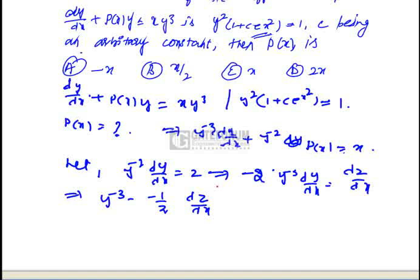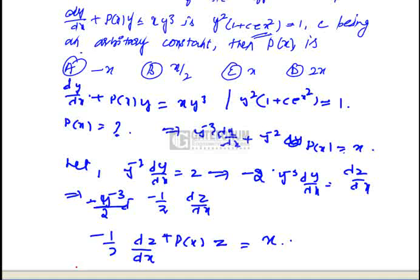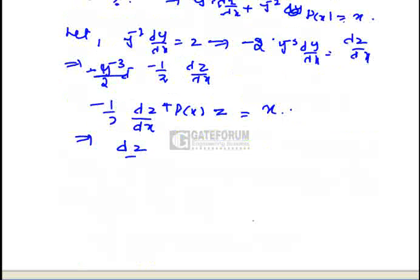Substituting the values of y^(-2) and y^(-3) into the differential equation: y^(-3) becomes minus 1/2 times dz/dx, p(x) remains as is, and y^(-2) becomes z. This simplifies to dz/dx minus 2xz equals minus 2x.